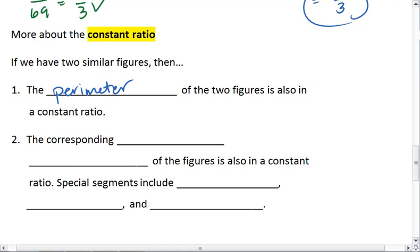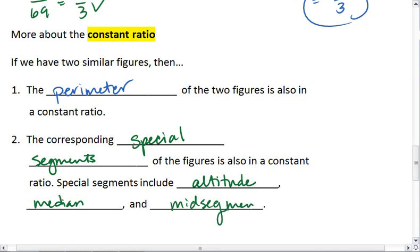Also, if we have two similar figures, then the corresponding special segments of the figures is also in a constant ratio. Special segments can include the altitude, median, and the midsegment.